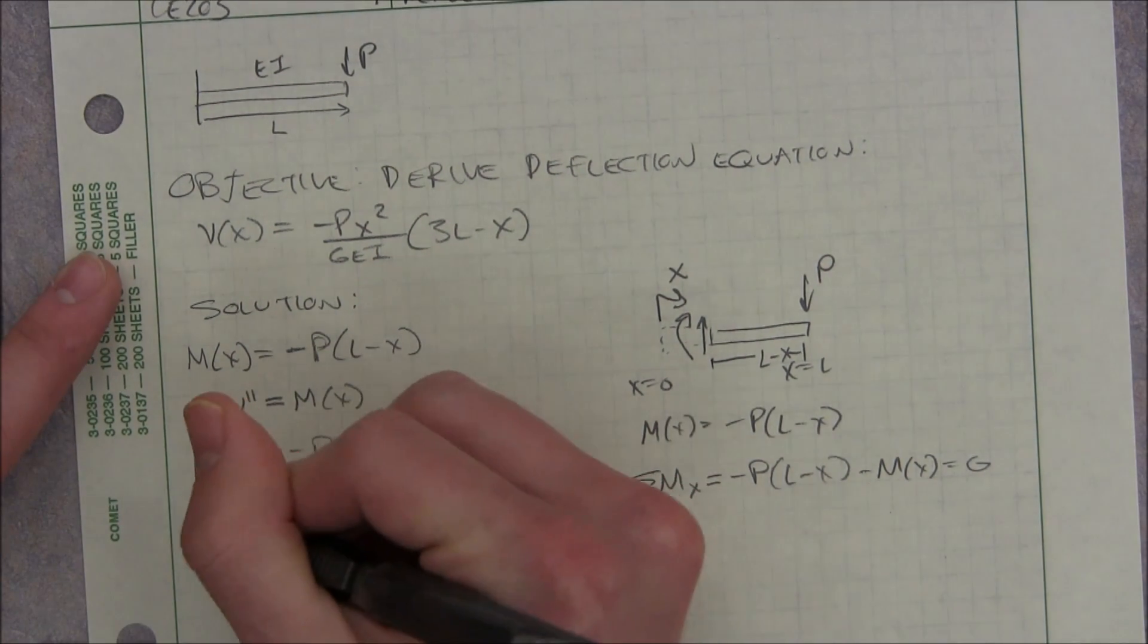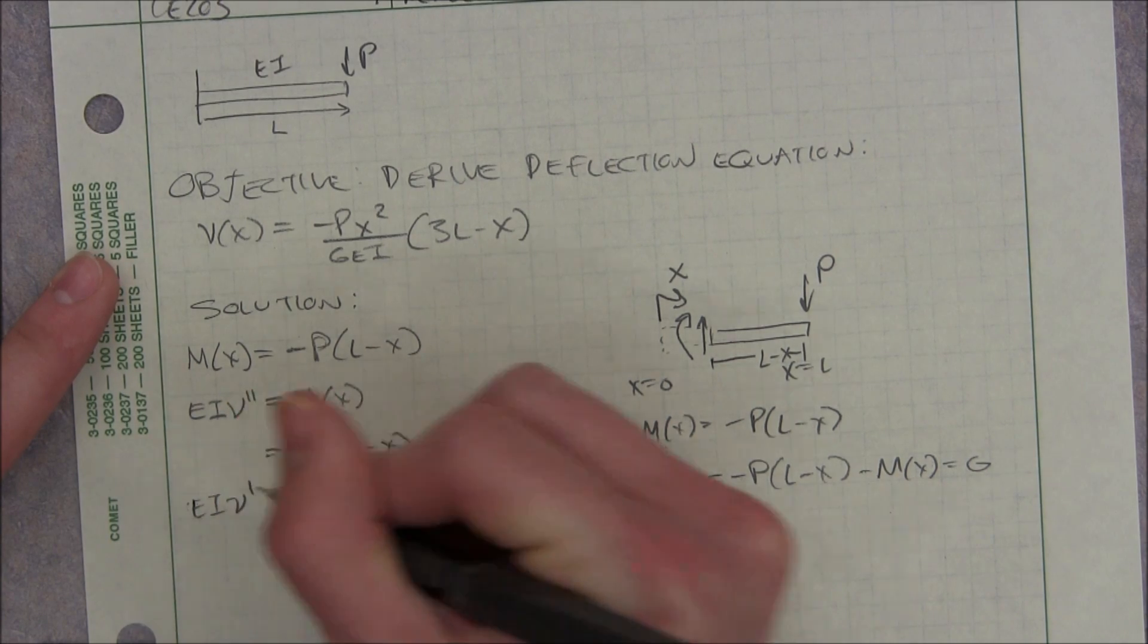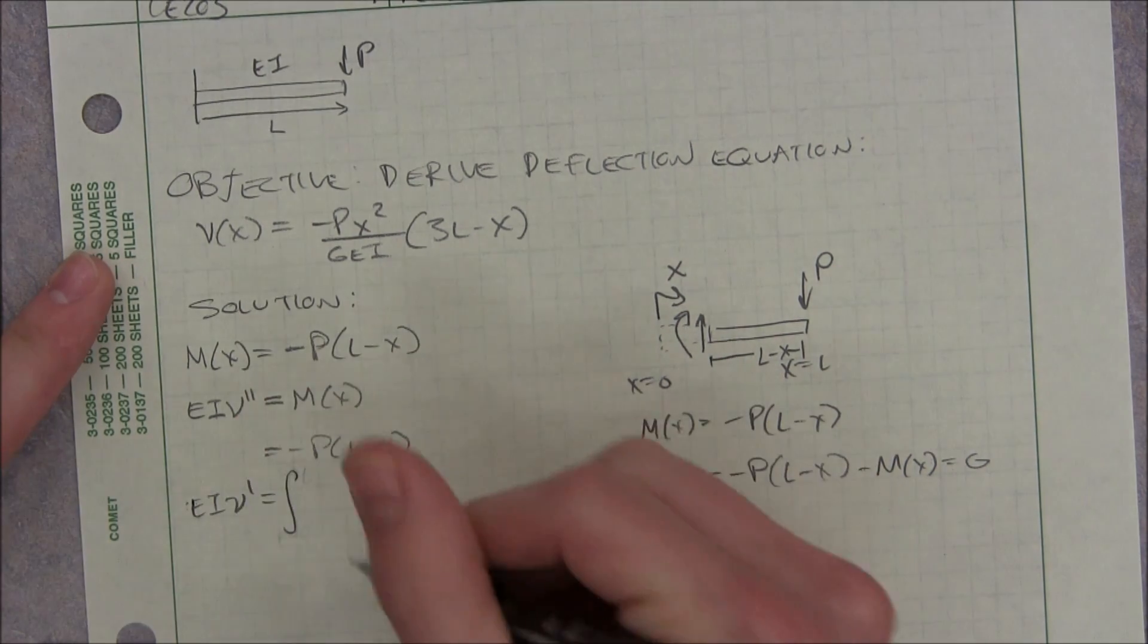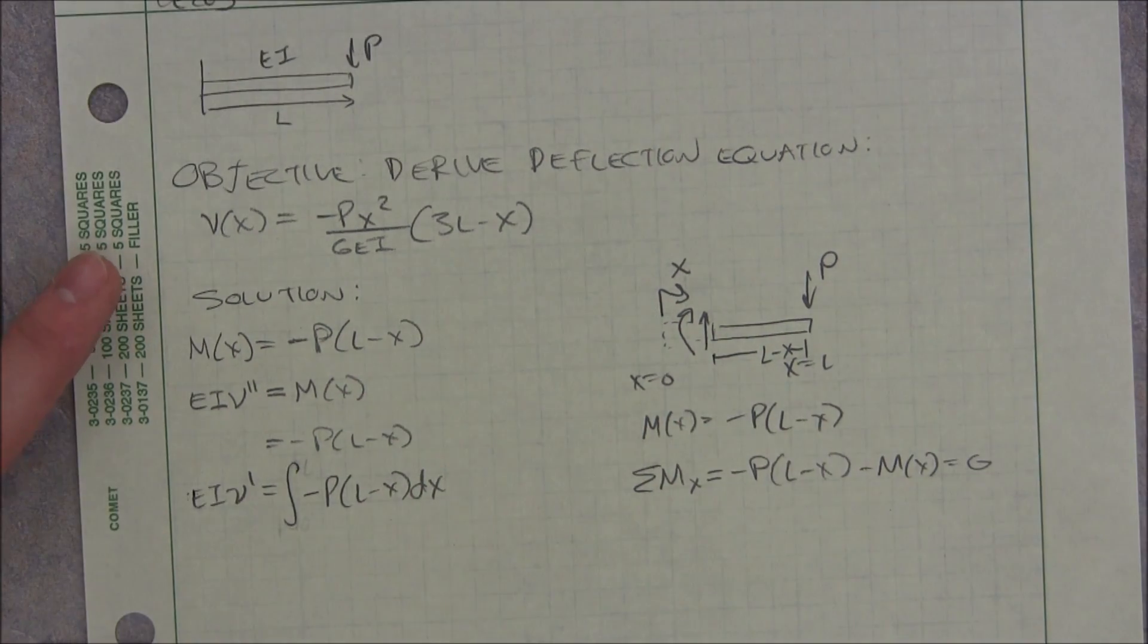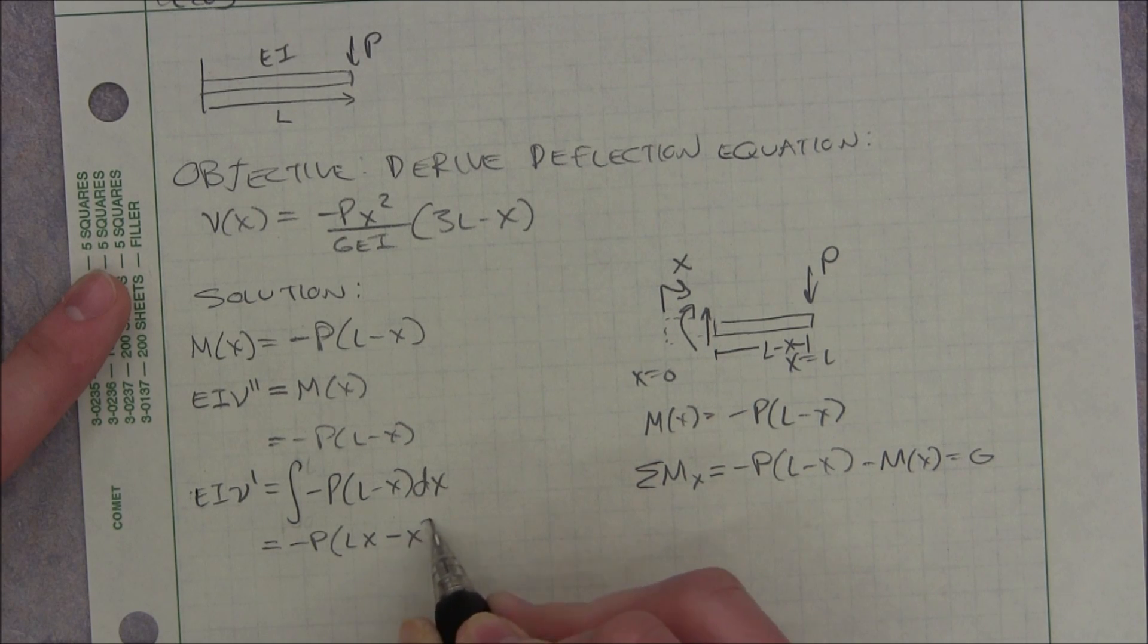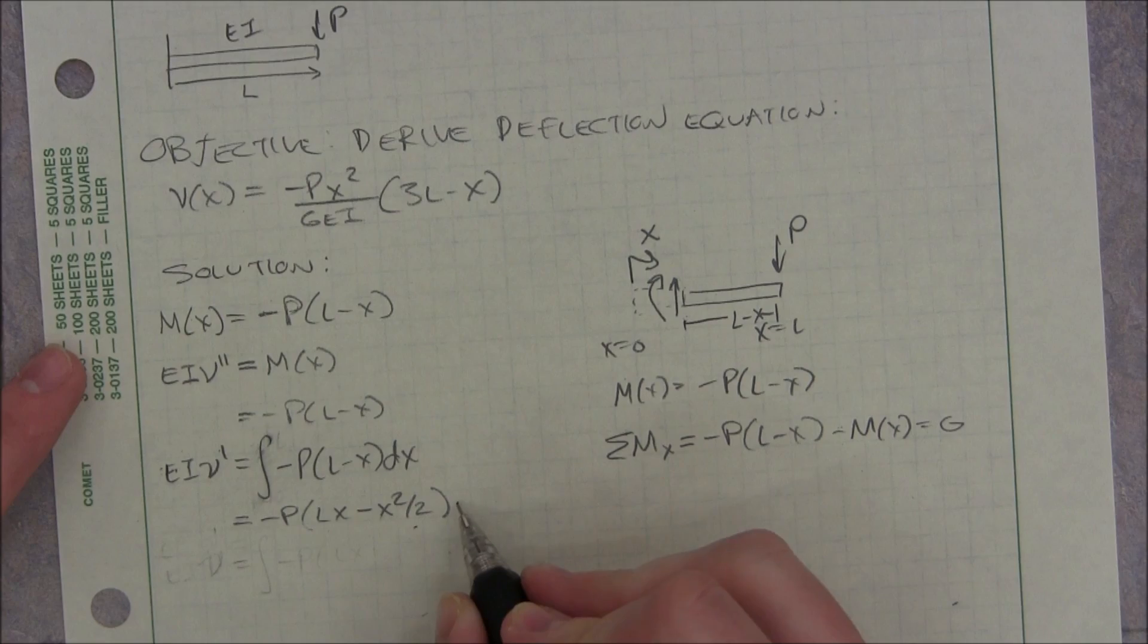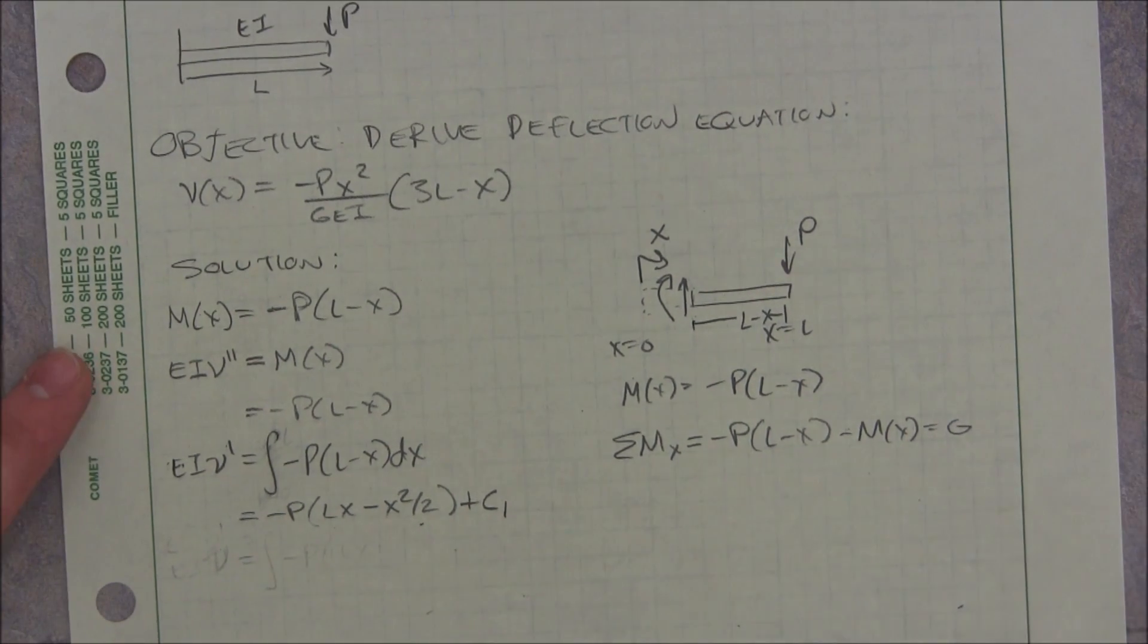That means that our EI, for our slope, integration negative P L minus x dx. I can take the negative P out and that's going to be L times x minus x squared divided by 2. You can't forget the integration constant, I'm sure we'll have another one.